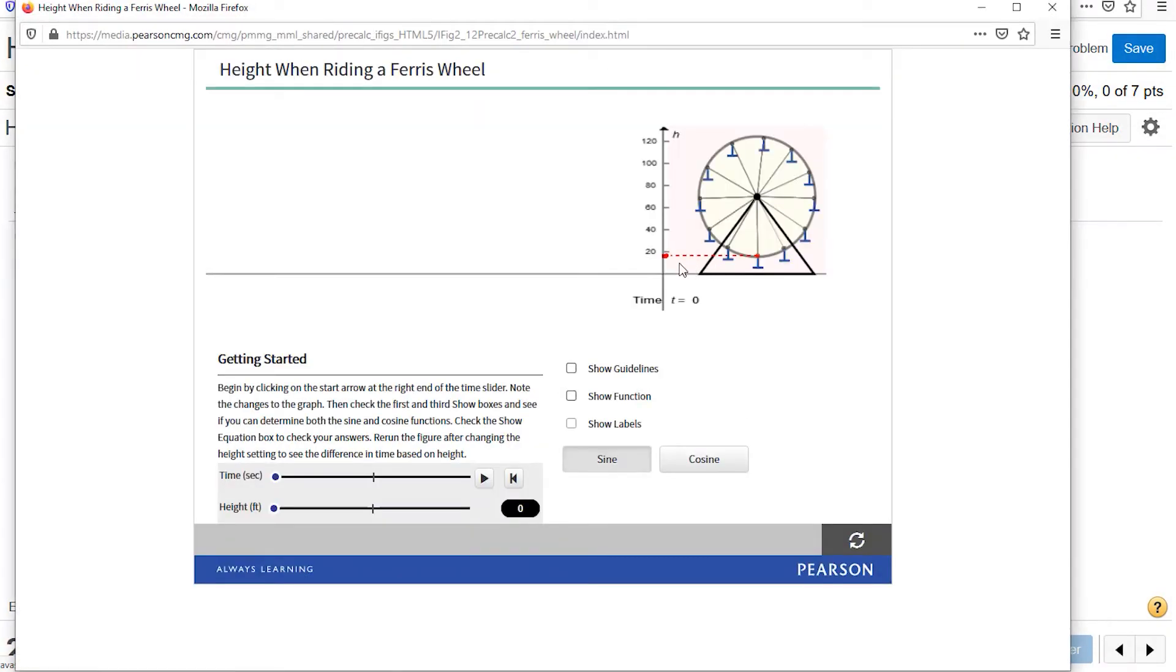And then I love after seeing that, the next question I have here is showing how that can model your height on a ferris wheel. Hit play again, we see the ferris wheel turning and the height of person on a ferris wheel actually traces out a sine curve or cosine depending on your shift of course.